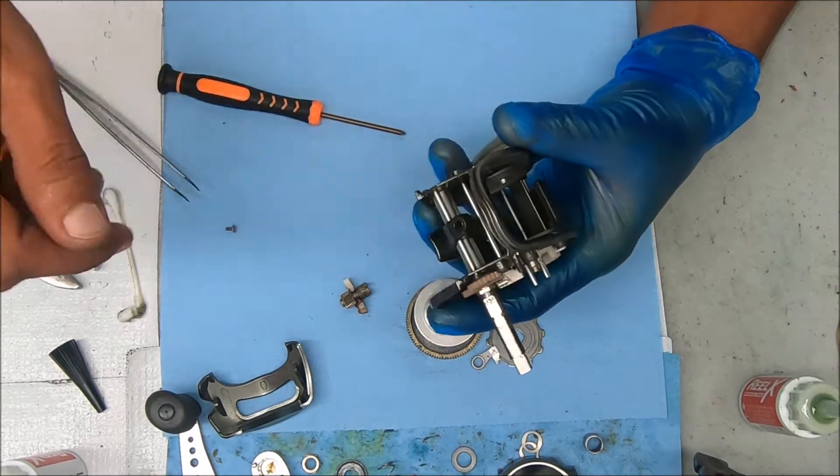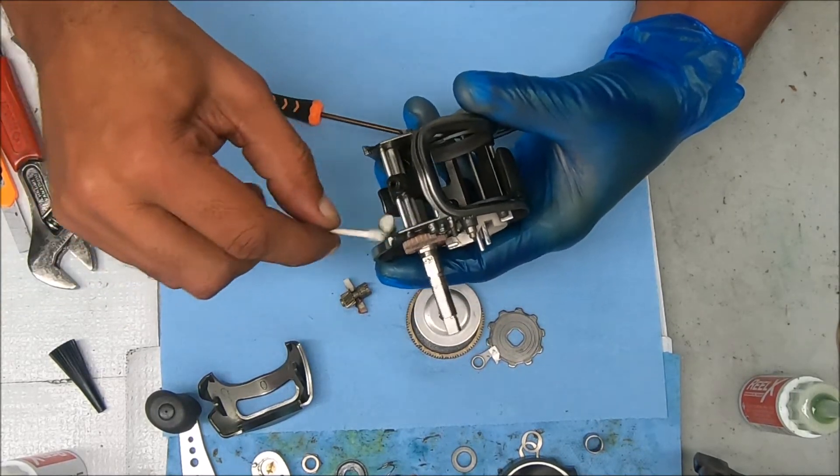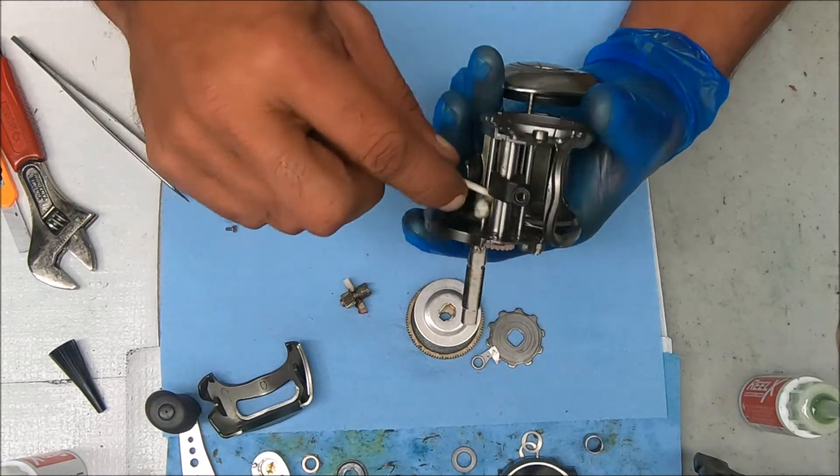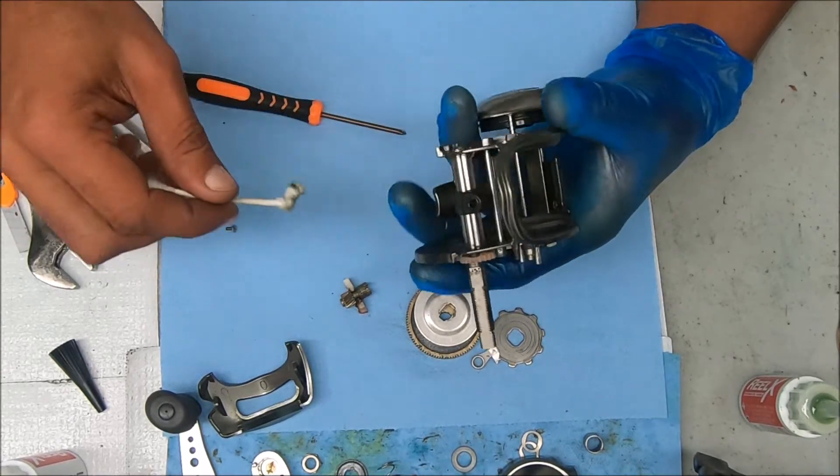You want to make sure there's no corrosion or rust or anything on these posts that the lever or the line guide runs on. And I don't see any, so I think we're good there.